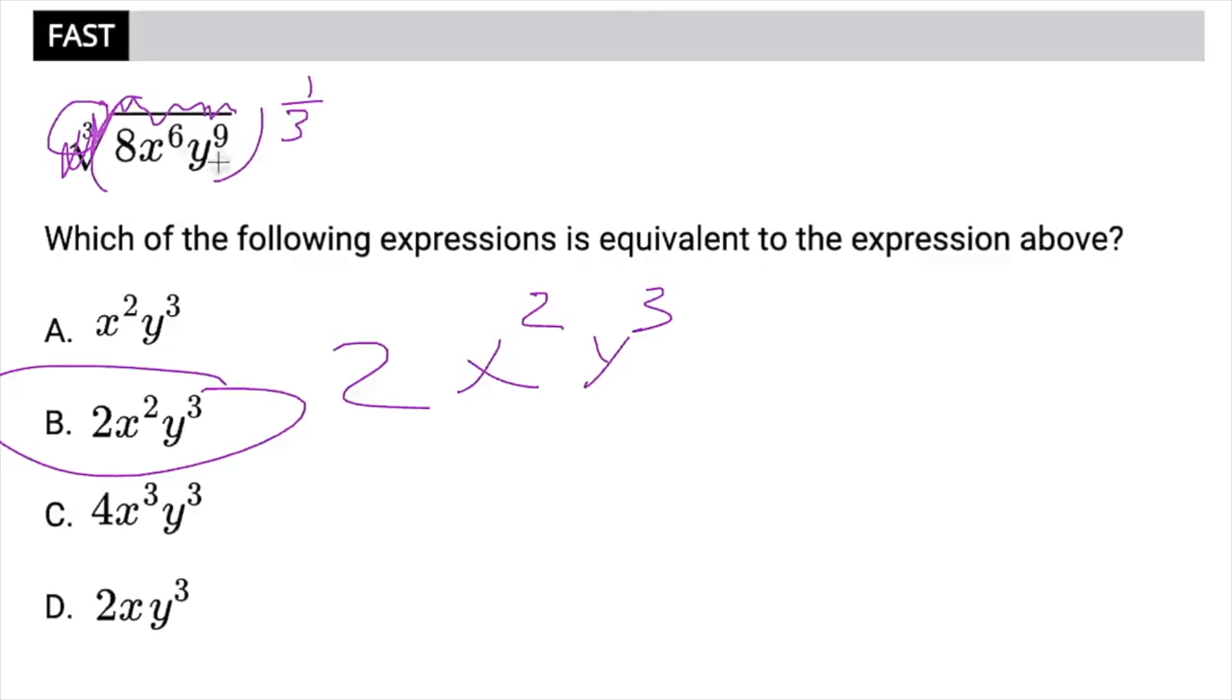And then the rule for exponents is, if you are raising an exponent to another exponent like this, you multiply. So 6 times 1 over 3 would be 6 over 3, or 2. And then 9 times 1 over 3 would be 9 divided by 3, or 3. So that's how I got choice B in under 10 seconds.